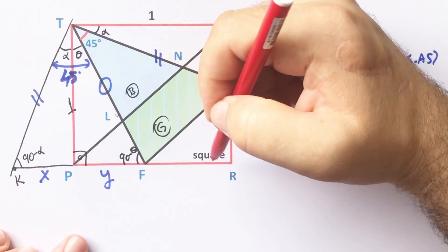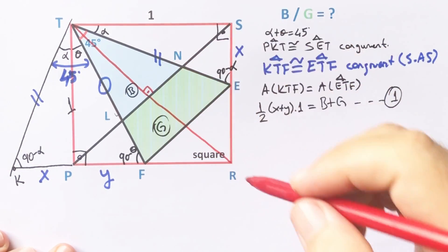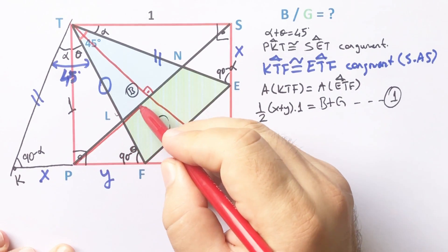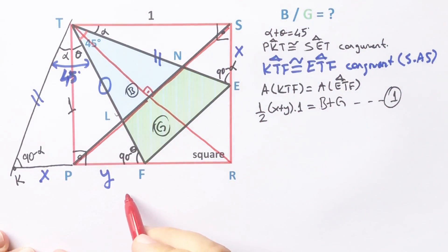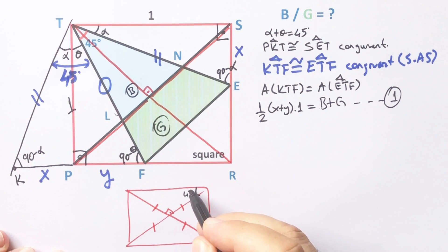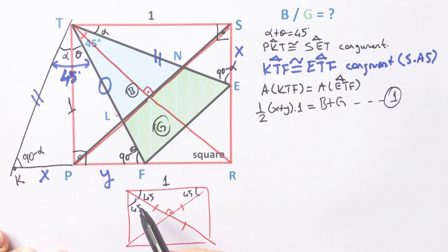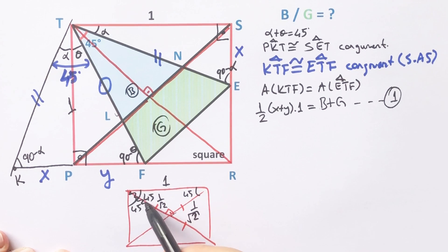Now, if we draw the other diagonal of this square, here must be 90 degrees and these four parts must be equal. As a reminder — if you have a square and draw its diagonal, the angle must be 90 degrees, the four parts must be equal, and the angles are 45 degrees. If this length is one unit, then this length must be 1 over root 2, because of the isosceles right triangle.